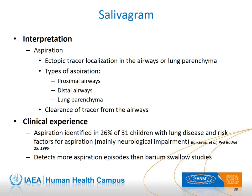Aspiration of saliva is quite often seen in children with risk factors for aspiration, mainly those with neurological disabilities. Saliva aspiration was identified in 26% of children with risk factors and lung disease, and others have reported a similar incidence. The salivagram detects more aspiration episodes than the barium swallow, although, as mentioned, these are different types of aspiration.